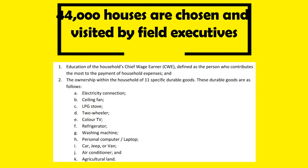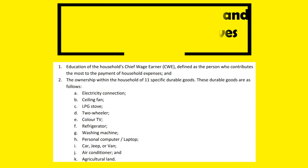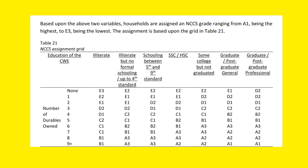There are guidelines provided under the New Consumer Classification System, or NCCS, to identify the socio-economic background of each household. There are two main variables: the education level of the main wage earner, and the ownership of consumer durables from a list of 11 items ranging from an electricity connection to a car. Based upon these two variables, households are assigned an NCCS grade ranging from A1, being the highest, to E3, being the lowest.